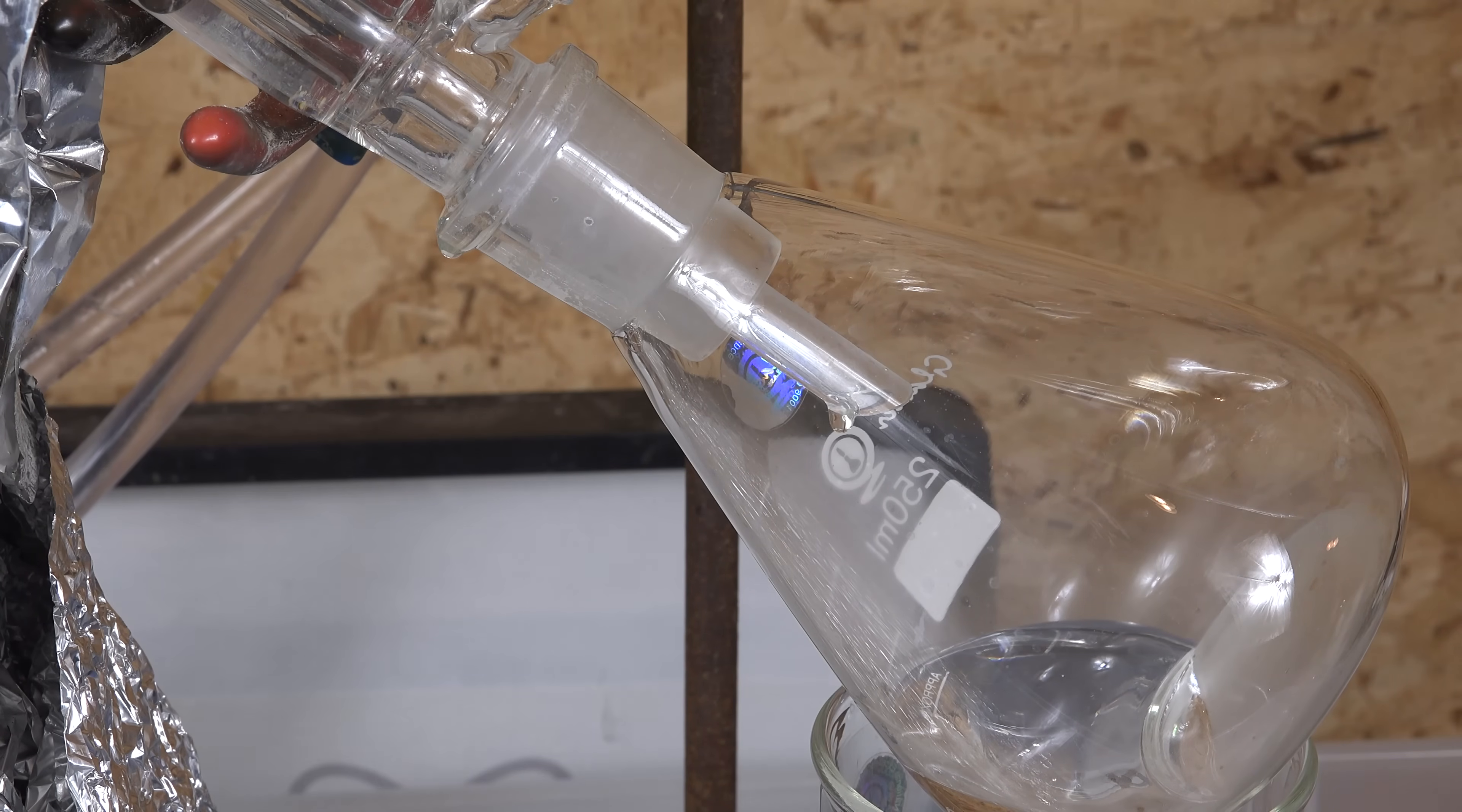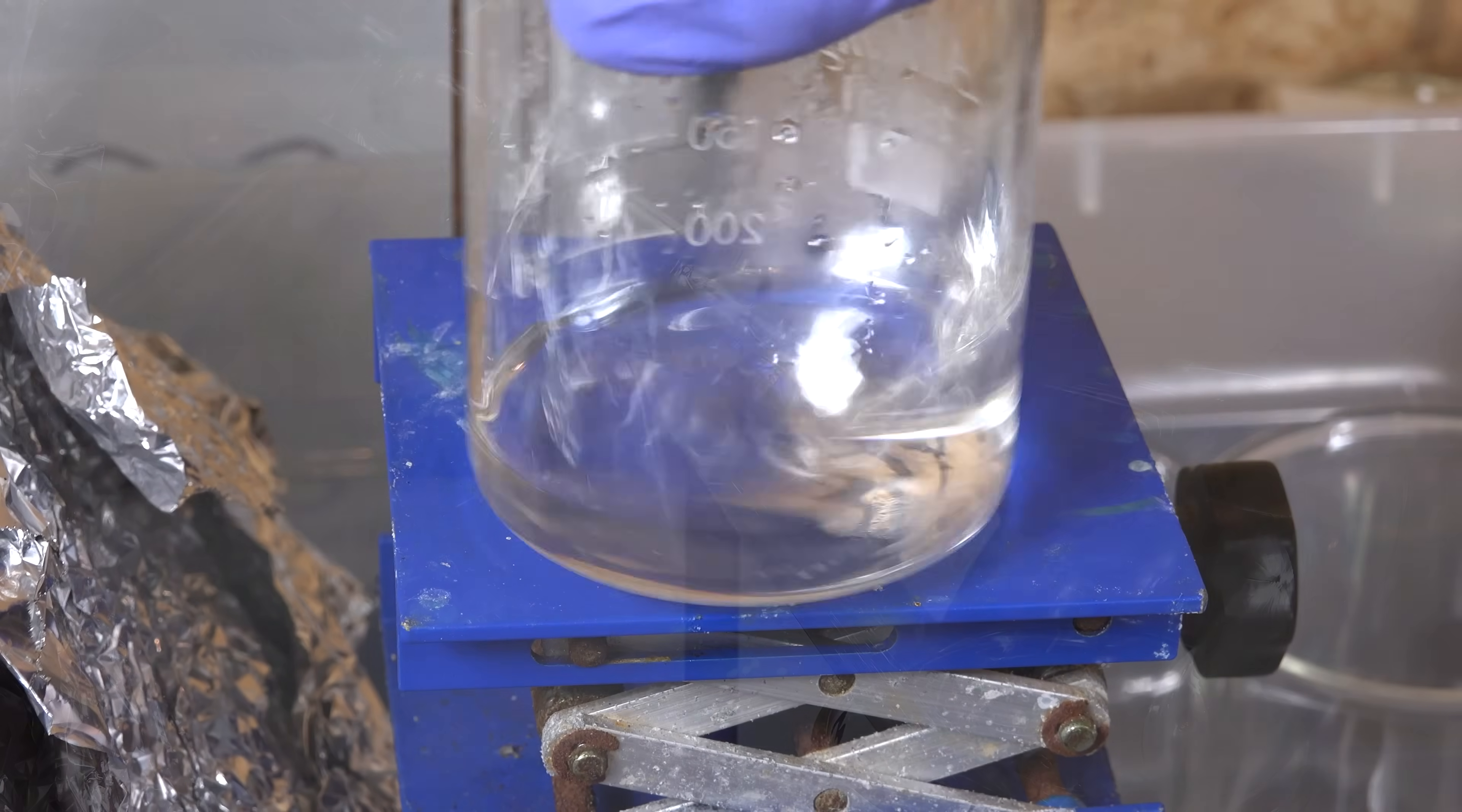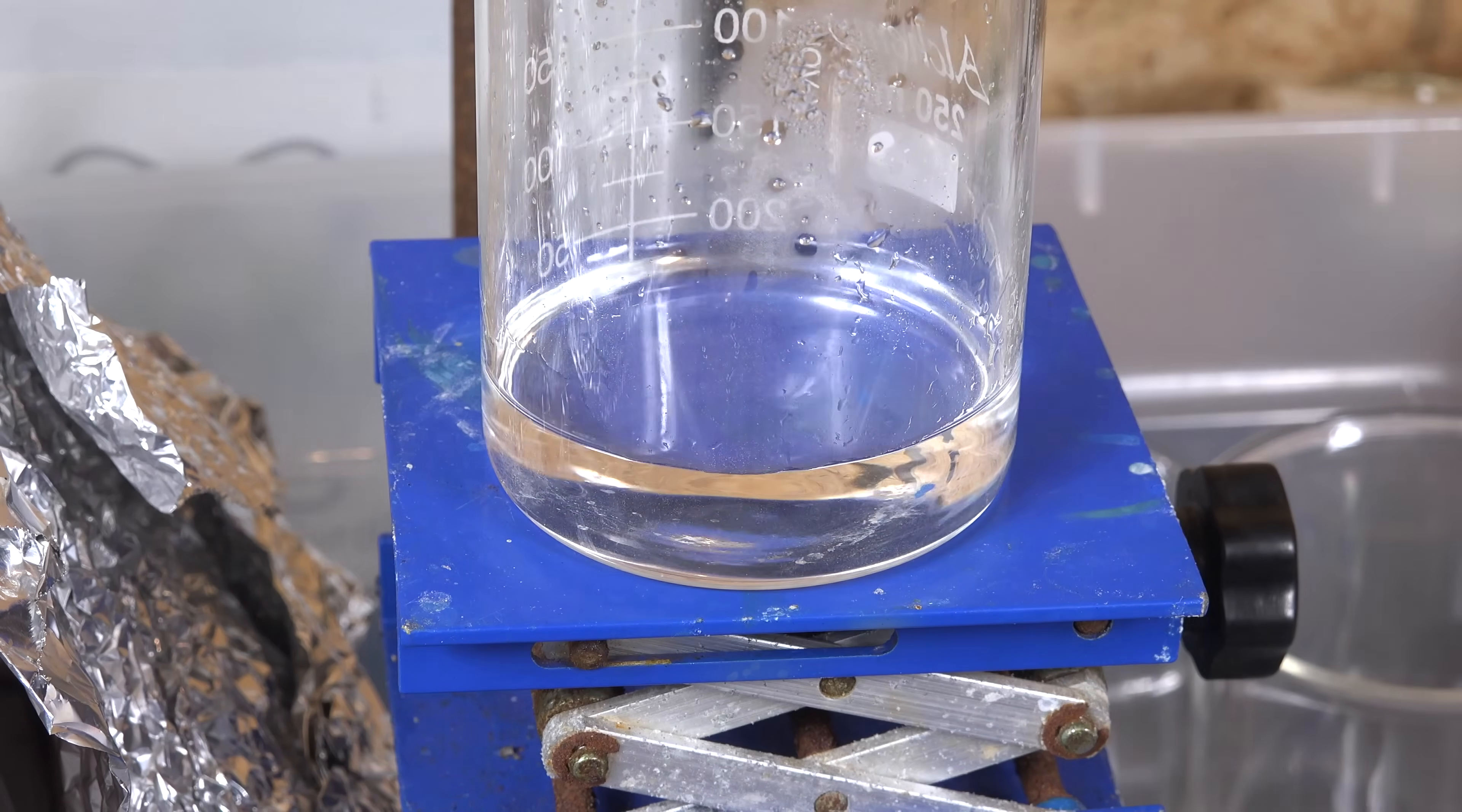I kept checking the density of the distillate as it came off and when the density was above that of water, I start collecting the sulfuric acid. And there it is, about 70g of diluted sulfuric acid.